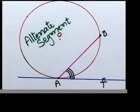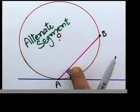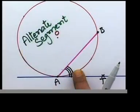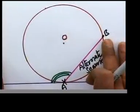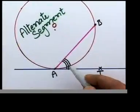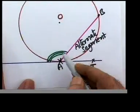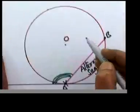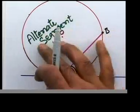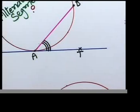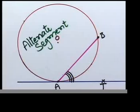So to summarize: there is a tangent and a chord. You choose the angle between the tangent and the chord, and the space on the other side is called the alternate segment. In the second example we chose the obtuse angle; in the first we chose the acute angle. When you choose the obtuse angle, the minor segment is the alternate segment. When you choose the acute angle, the major segment is the alternate segment.